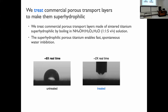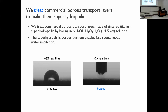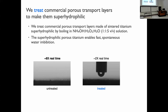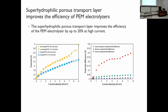We treated a commercial porous transport layer to make it super hydrophilic. Comparing two movies: on the left, the untreated porous transport layer takes much longer for water to imbibe into it; on the right, in the treated super hydrophilic layer, as soon as the water touches the surface it completely disappears because capillary suction is so high. The question is whether this super hydrophilic porous transport layer indeed improves the efficiency of PEM electrolyzers — and the answer is yes.